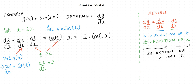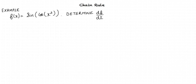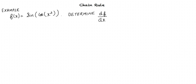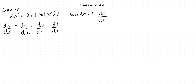I think I follow. Can we do another example? Sure. Let us evaluate the derivative of sin(cos(x²)). There seems to be more than just u and v as in the previous example. Yes, that is true. Let us extend the chain rule formula. By chain rule, we have df/dx equals dv/du times du/dt times dt/dx.